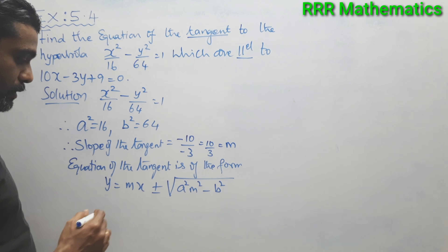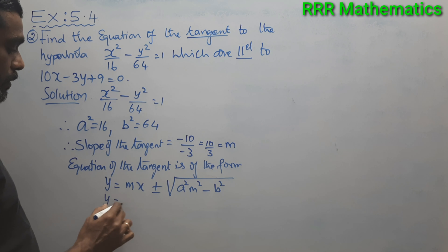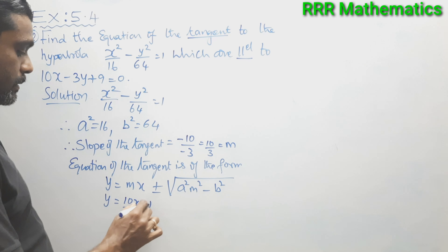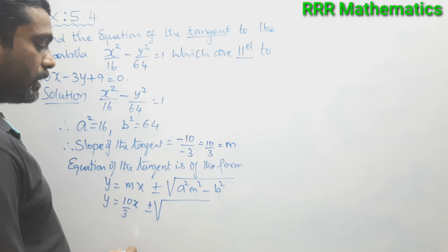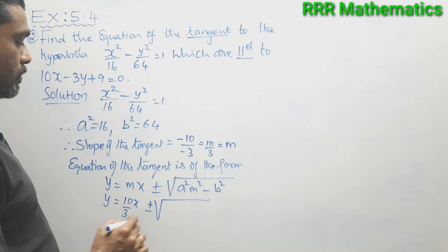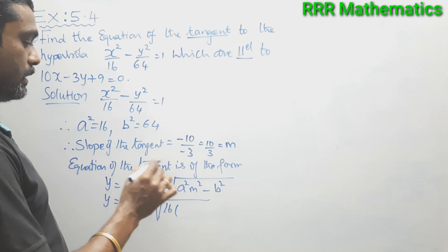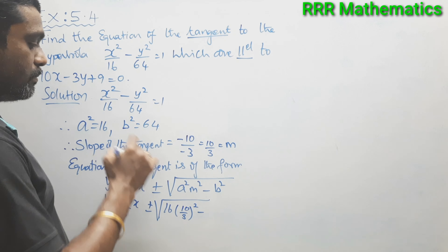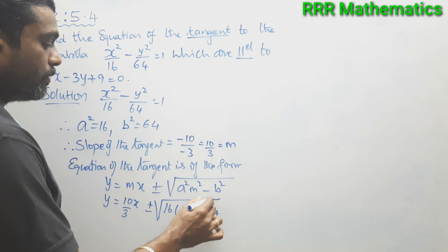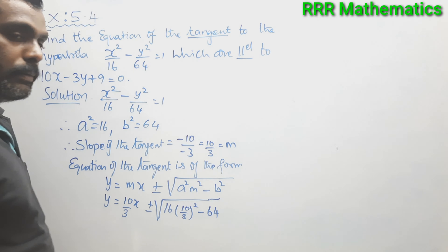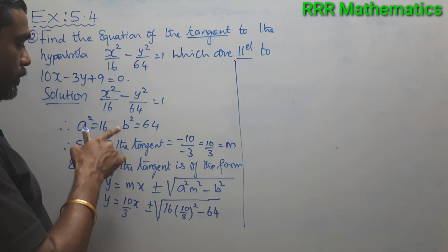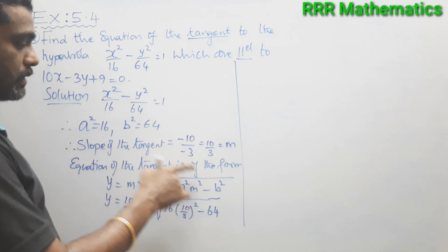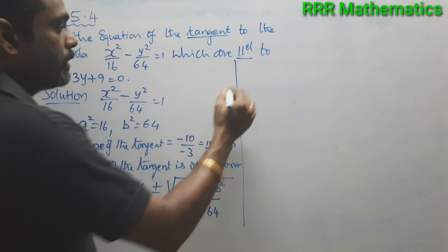Substituting m = 10/3, a² = 16, b² = 64: y = (10/3)x ± √(16 × (10/3)² − 64).